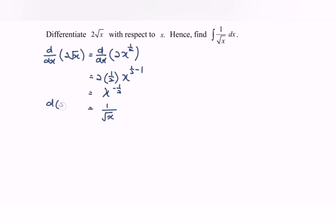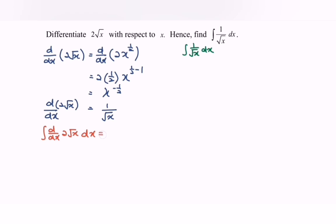So if we differentiate 2 square root of x with respect to x, we get 1 over square root of x. For Part 2, the question asks us to integrate 1 over square root of x with respect to x. Clearly, referring to the left-hand side, the question asks us to integrate this with respect to x. The same goes for the right-hand side: integrate 1 over square root of x dx. Since integration is the reverse process of differentiation, or the anti-derivative...